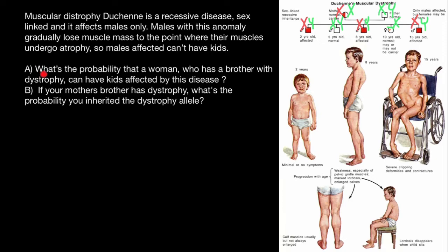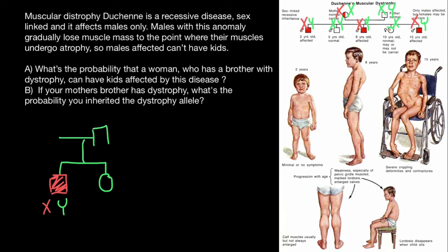Now let's return to our first question: What is the probability that a woman who has a brother with dystrophy can have kids affected by this disease? This woman has a brother who is affected with this genetic disorder, meaning he has a defective X chromosome and a normal Y chromosome. This brother and sister share the same parents. We know for sure that the father is phenotypically and genotypically normal, and the mother, who is phenotypically normal, must carry a defective X chromosome.